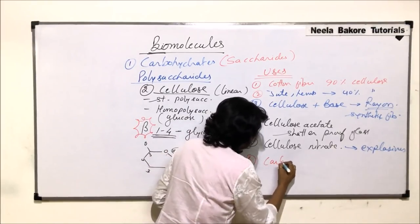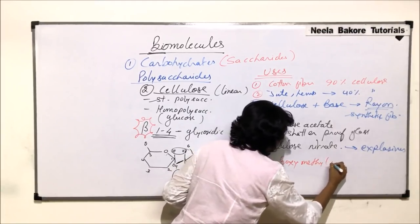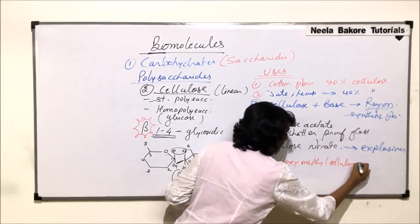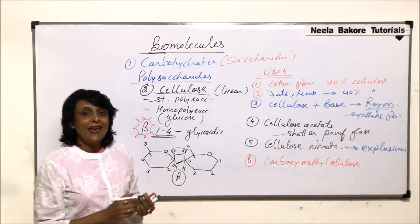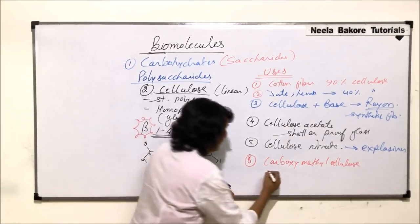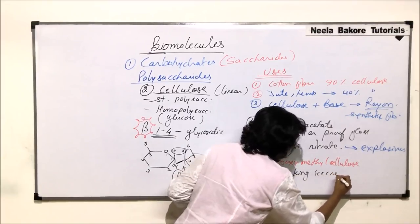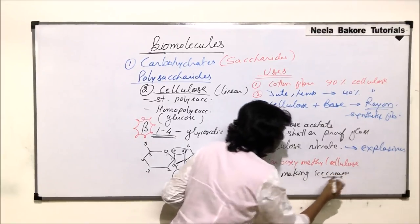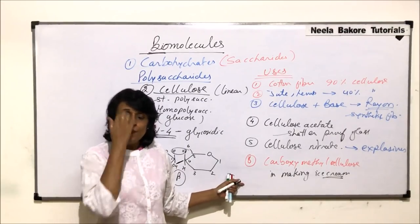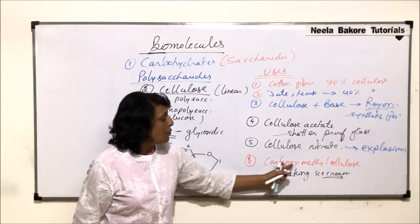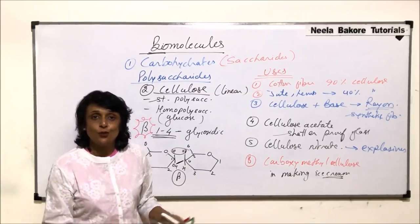One more use of cellulose is carboxymethylcellulose. Carboxymethylcellulose is normally used in making ice creams, and the reason why it is used in making ice cream is because it provides smoothness. In many ointments also, this carboxymethylcellulose is used to provide that smoothness or smooth texture to that thing.